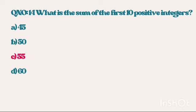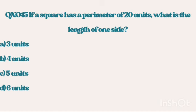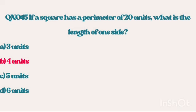Question number 15. If a square has a perimeter of 20 units, what is the length of one side? Answer is 4 units.